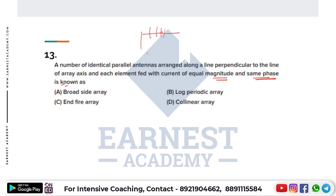What type of array is this: broadside array, log-periodic, end-fire, or collinear? Same phase corresponds to the broadside array, and out-of-phase corresponds to the end-fire array. The correct answer is A — broadside array.